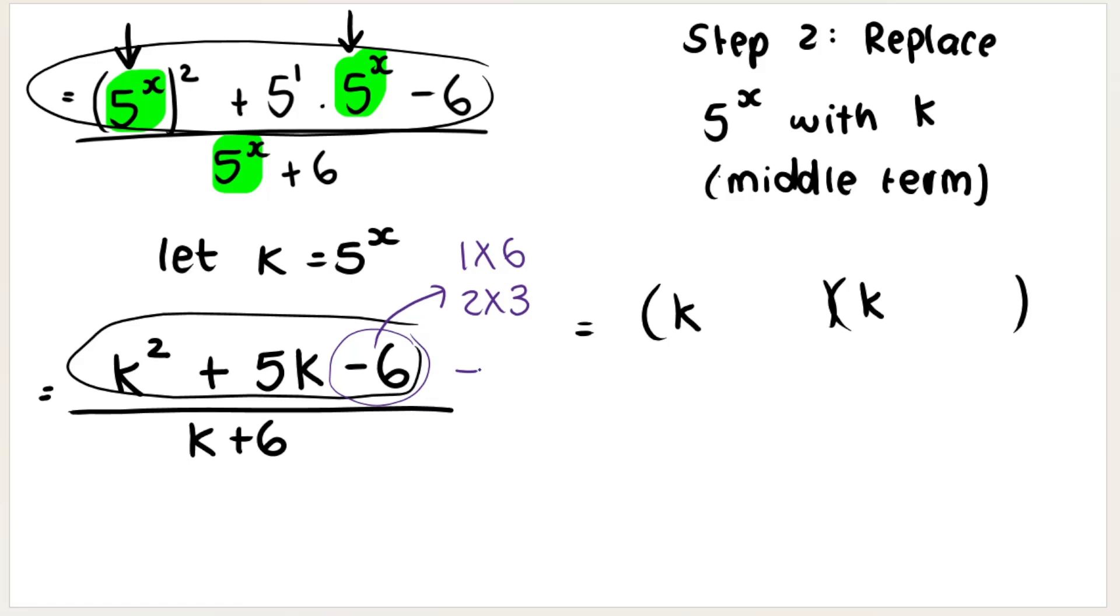I need to make a negative 6. So I think it's going to be a negative or positive 6. Let's say rather positive 6 and a negative 1. Yes. Positive 6 minus 1, that gives me a positive 5 to the middle term and positive 6 times negative 1. That gives me negative 6, the last term.